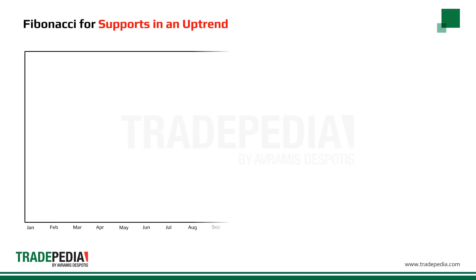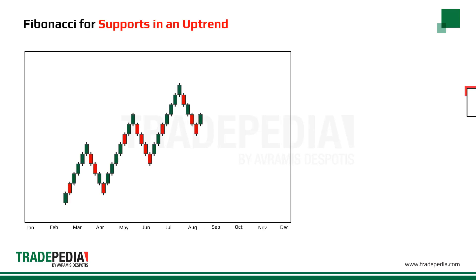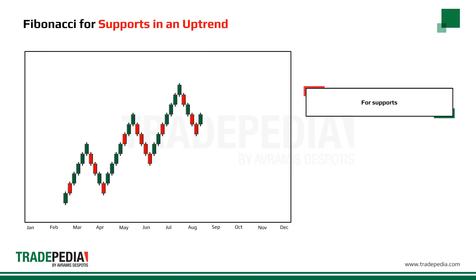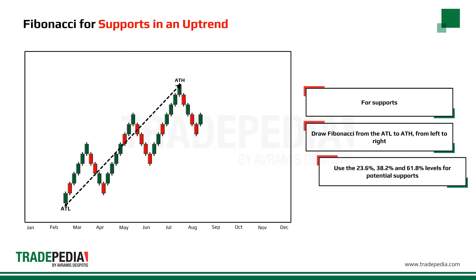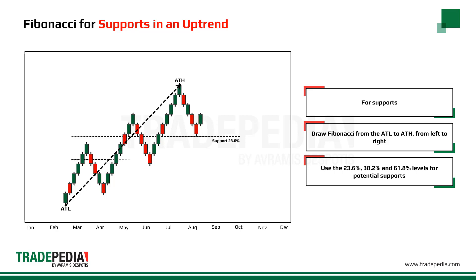Finding supports in an uptrend using Fibonacci: draw Fibonacci from the all-time low to the all-time high, always from left to right. Use the 23.6%, 38.2%, and 61.8% levels as potential supports.